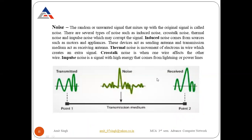The third cause is noise. The random or unwanted signals that mix up with the original signal are called noise. There are several types of noise: induced noise, crosstalk noise, thermal noise, and impulse noise, all of which may corrupt the signals. For example, when talking on a landline phone, sometimes the voice is not clear due to external noise that combines with the signal, preventing you from hearing your friend properly.